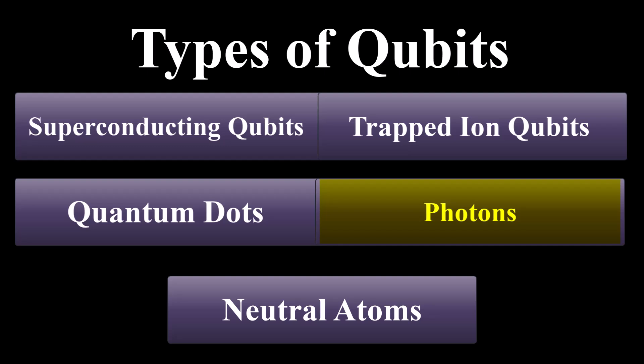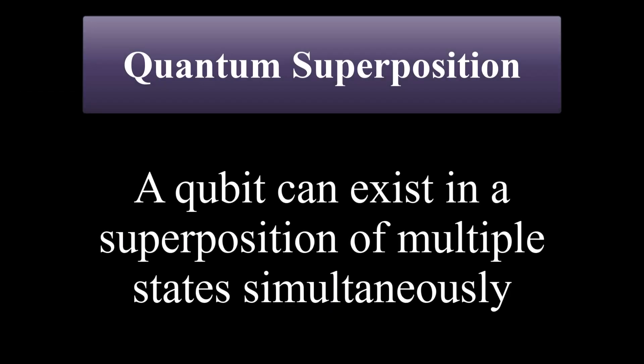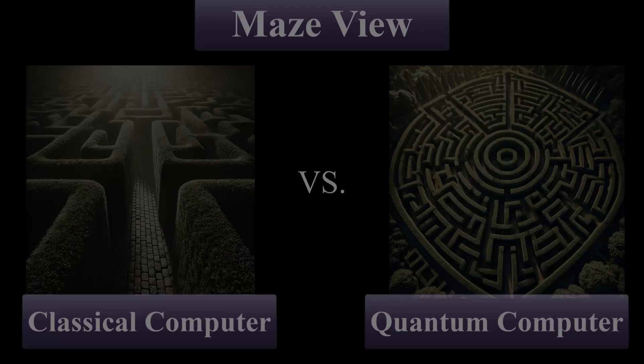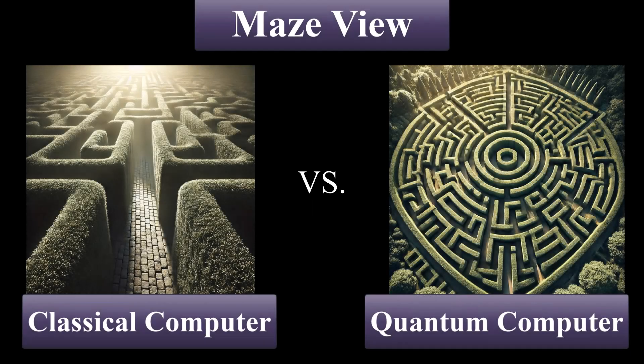Photons enable long-distance quantum communications and cryptography. And neutral atoms, controlled with lasers, excel in scaling operations. What makes qubits truly powerful is their ability to exist in superposition, holding multiple states at once. This allows quantum computers to solve problems in ways classical computers can't. There is a great example offered by IBM to better understand the concept.